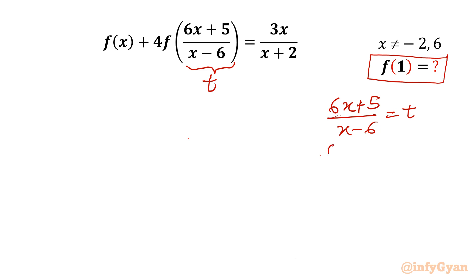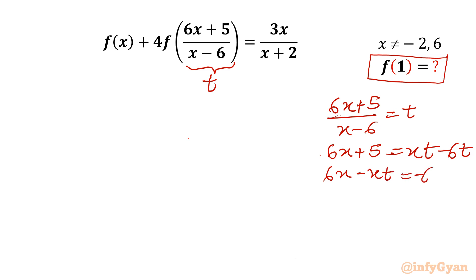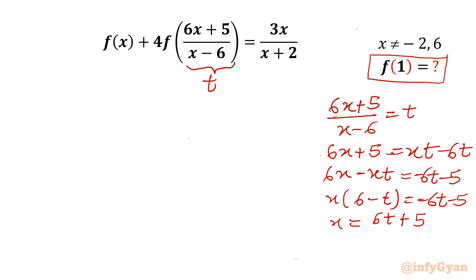Now cross multiply: 6x + 5 = xt - 6t. Taking x terms to one side: 6x - xt = -6t - 5. Taking x common: x(6 - t) = -6t - 5. So x = (6t + 5)/(t - 6).